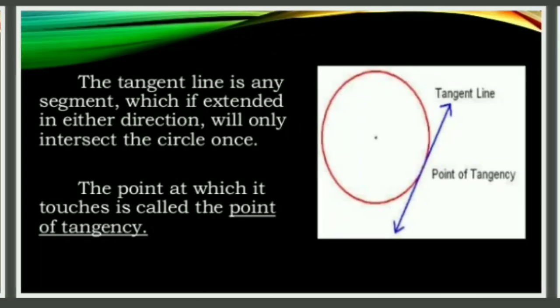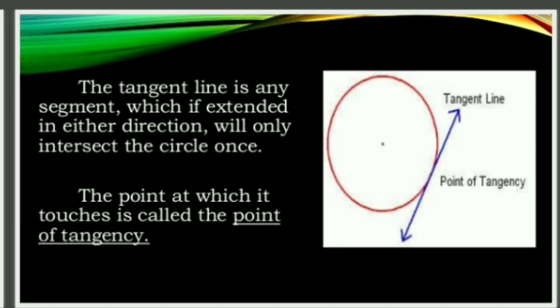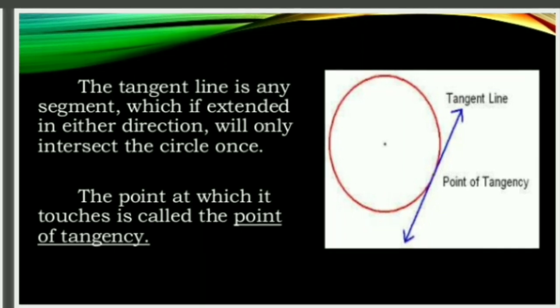Tangent line: The tangent line is any segment which, if extended in either direction, will only intersect the circle once. The point at which it touches is called the point of tangency.